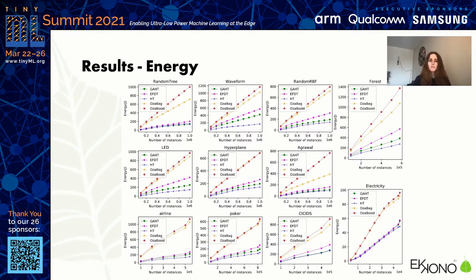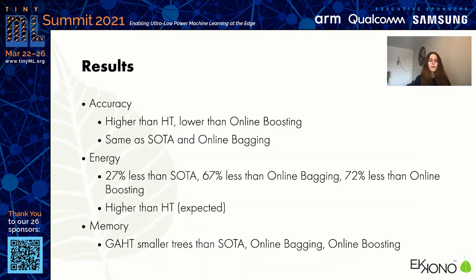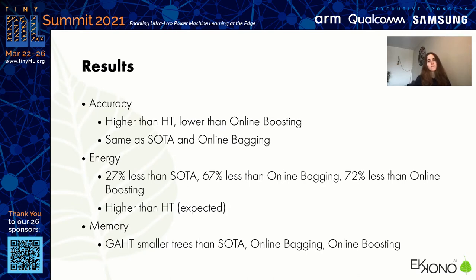In terms of numbers, we are able to achieve 27% less energy than state-of-the-art, 67% less energy than online bagging, and 72% less energy than online boosting — with only a little bit higher energy consumption than Hoeffding trees, as expected, to achieve that higher accuracy.